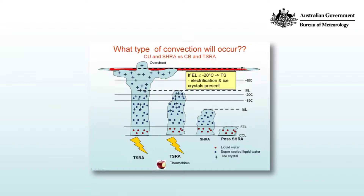Firstly, there's the convective condensation level, which forms the cloud base of the convective clouds and is common to all. The second is the freezing level — the zero degrees Celsius isotherm — and below that the clouds consist of liquid water only. Between the freezing level and about minus 15 or minus 20 degrees Celsius, the clouds are a mixture of supercooled liquid water and ice crystals.